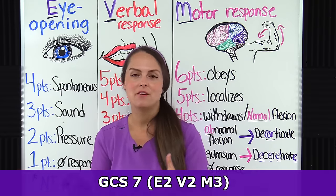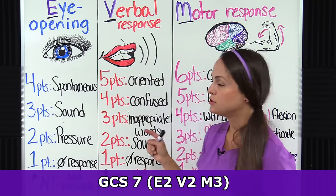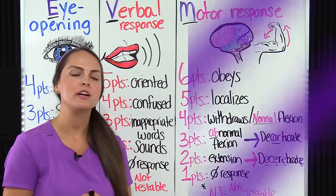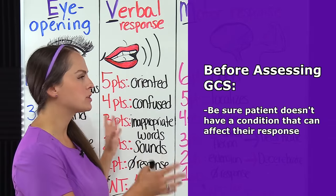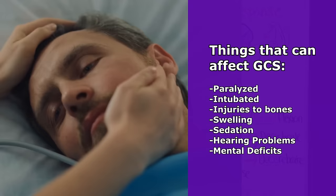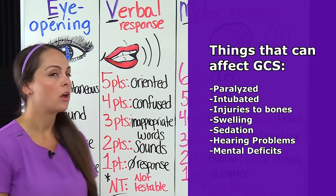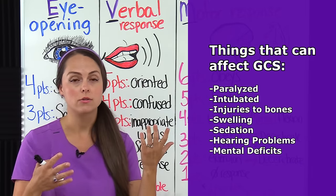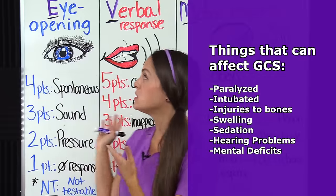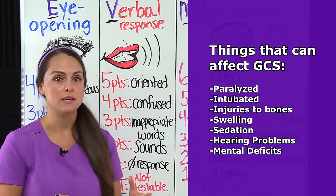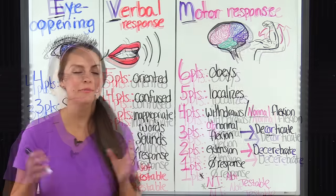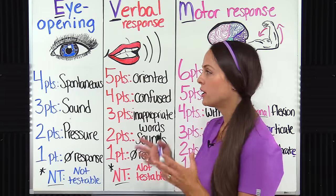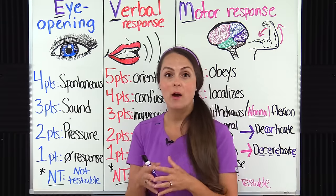Before performing this scale assessment, make sure your patient doesn't have anything that could affect their ability to respond in any of the three categories. For instance, if your patient is paralyzed, that will affect their motor response. If they're intubated, it limits their verbal response. Facial injuries or swelling affect their ability to open their eyes, as does sedation, hearing impairment, or mental deficits. We want to make sure we're getting the best response and interpreting the GCS score correctly to have a good idea of what's going on with our patient.